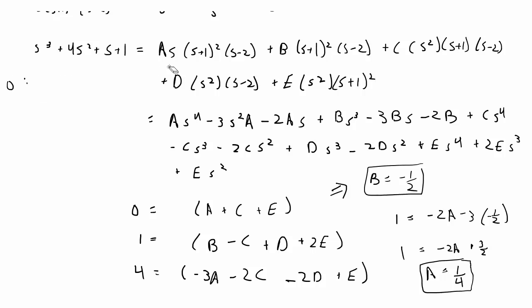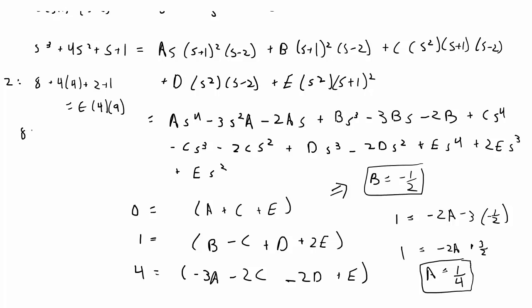We can also plug in values directly. Plugging in s = 0 gives B, which we already have. Plugging in s = 2 isolates E: on the left hand side that's 8 plus 4 times 4 plus 2 plus 1 equals E times 4 times 9. So 27 equals 36E, giving E equals 3/4.